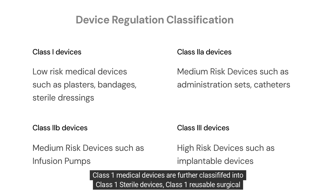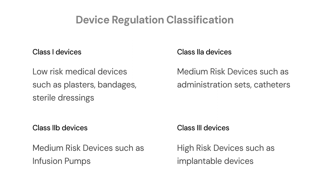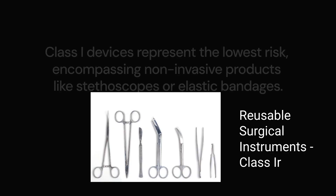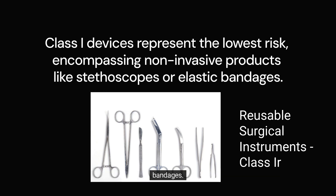Class 1 medical devices are further classified into class 1 sterile devices, class 1 reusable surgical instruments, and class 1 measuring devices. Class 1 devices represent the lowest risk; these encompass non-invasive products such as stethoscopes or elastic bandages.